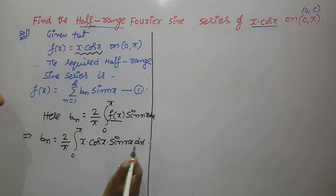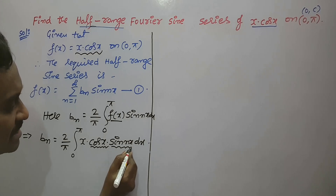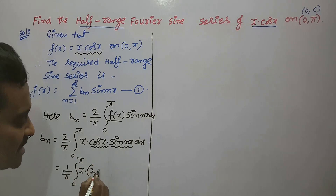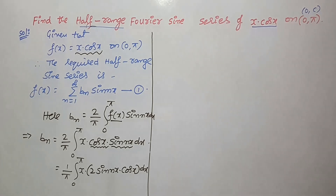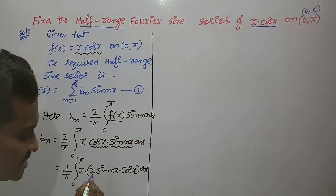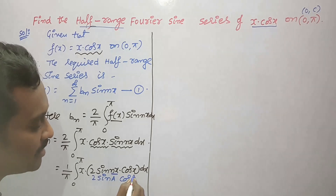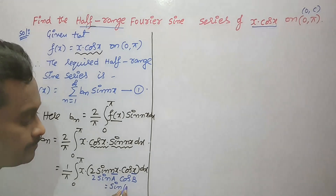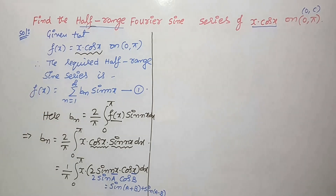We have cos(x)·sin(nx) in the product, so I will take the 2 inside to get (1/π) · integral from 0 to π of x · 2·sin(nx)·cos(x) dx. We observe that this is in the form of 2·sin(A)·cos(B), where A = nx and B = x. The formula for 2·sin(A)·cos(B) is sin(A+B) + sin(A−B).